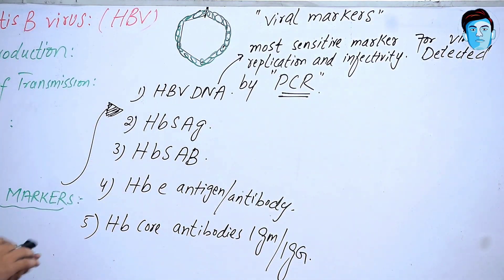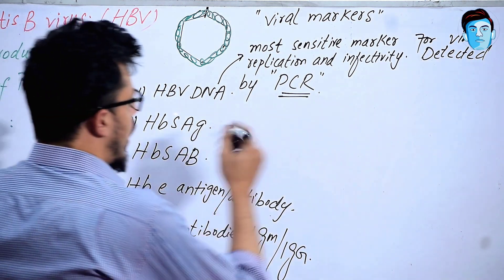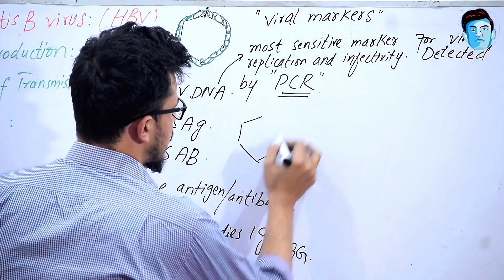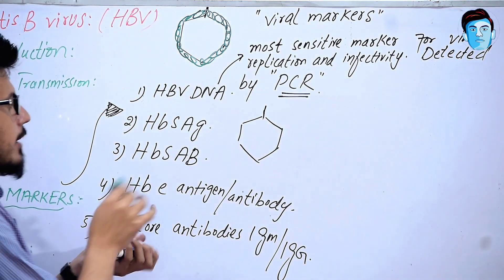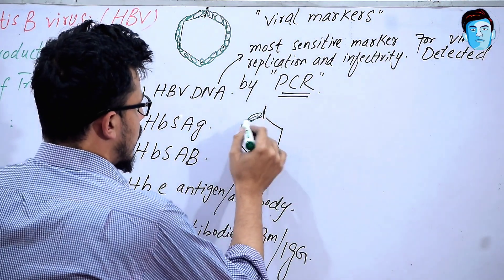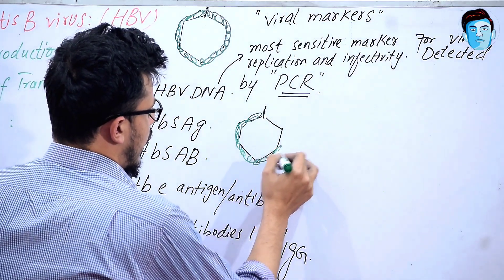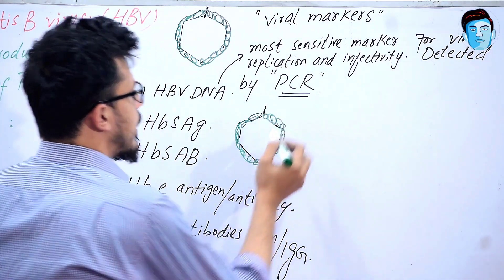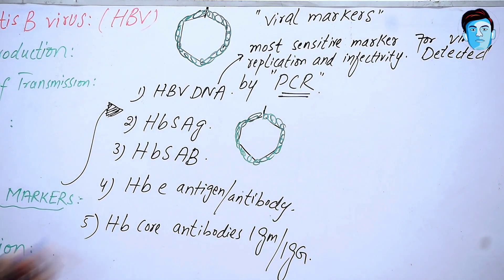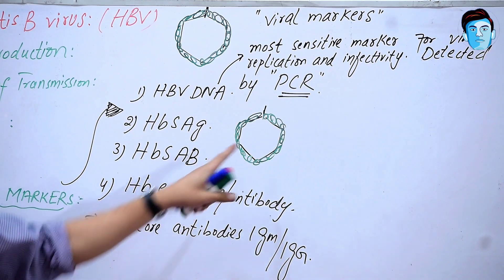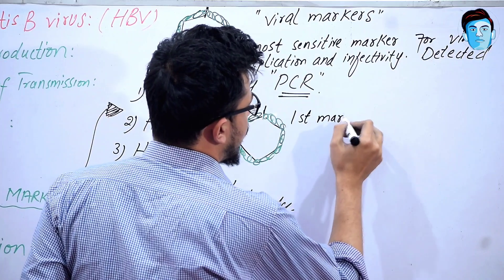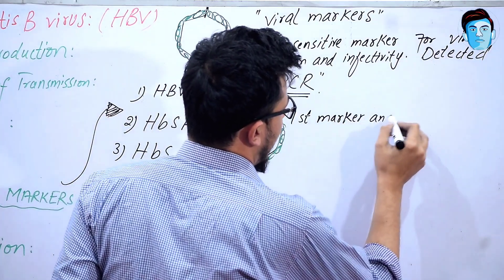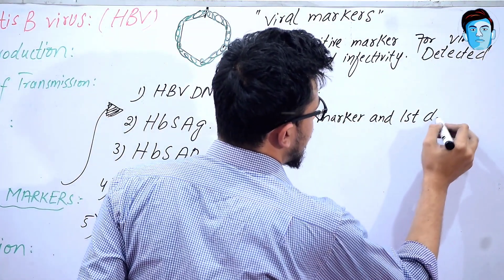Now, Hepatitis B surface antigen. On the surface of the Hepatitis B virus there are proteins, and these are called Hepatitis B surface antigen. These are responsible for acute infection. This is the first marker and first detectable antigen that is seen in the acute phase of infection.